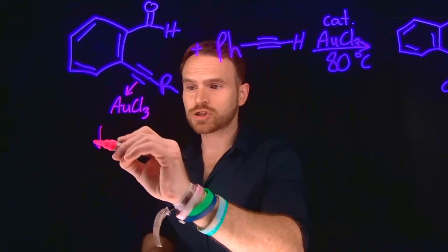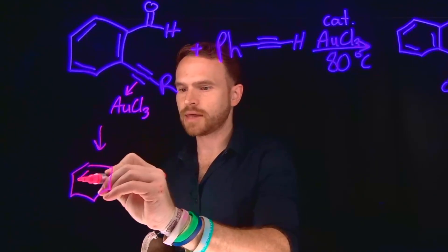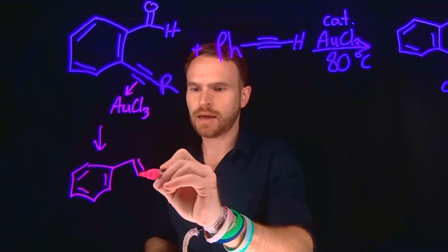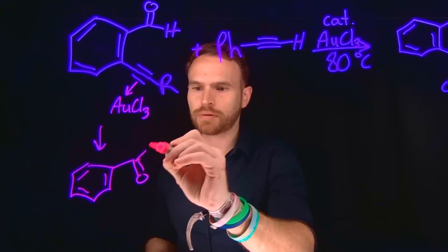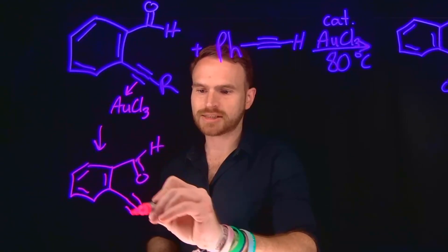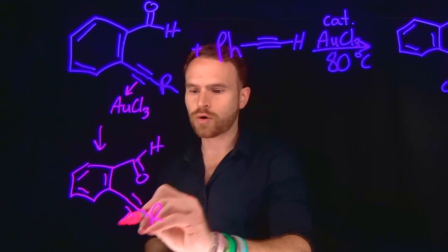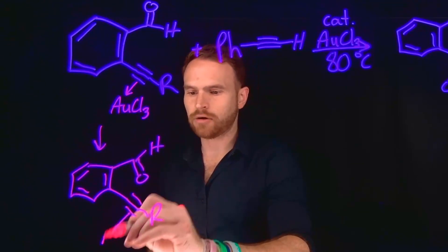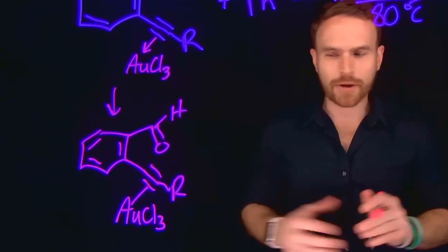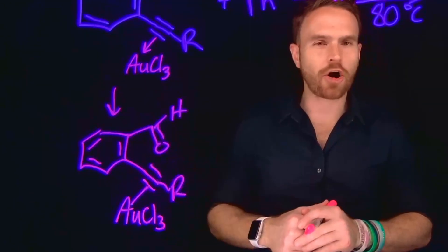So we can draw the product of this reaction being everything mostly still the same, where the benzene is here. I'm going to place our aldehyde in this position. We still have our alkyne, and coordinated to the alkyne is going to be that gold complex. And remember, this has weakened this carbon-carbon bond.